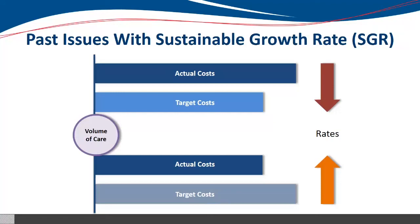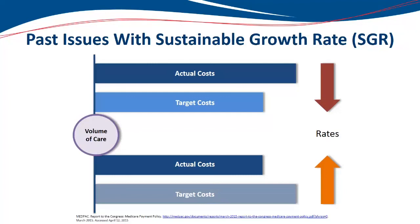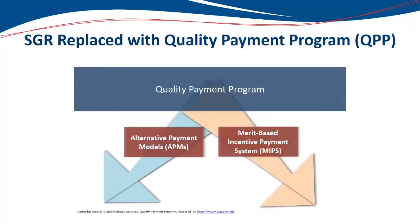The SGR formula never had incentives to provide any kind of control over the volume of services. It was going to be cutting payments without regard to quality or the efficiency of care. We had a series of legislative fixes until 2015, and then the SGR was replaced with what is now called the Quality Payment Program, put into place because of the passage of the Medicare Access and Children's Health Insurance Program Reauthorization Act of 2015 — MACRA for short.